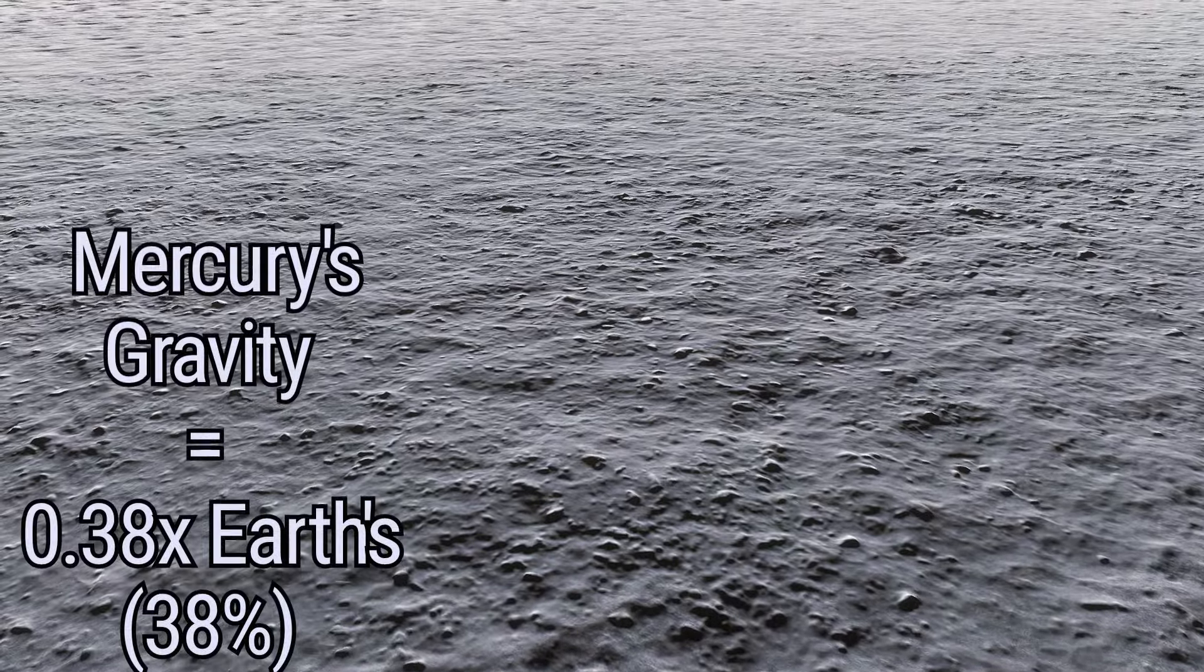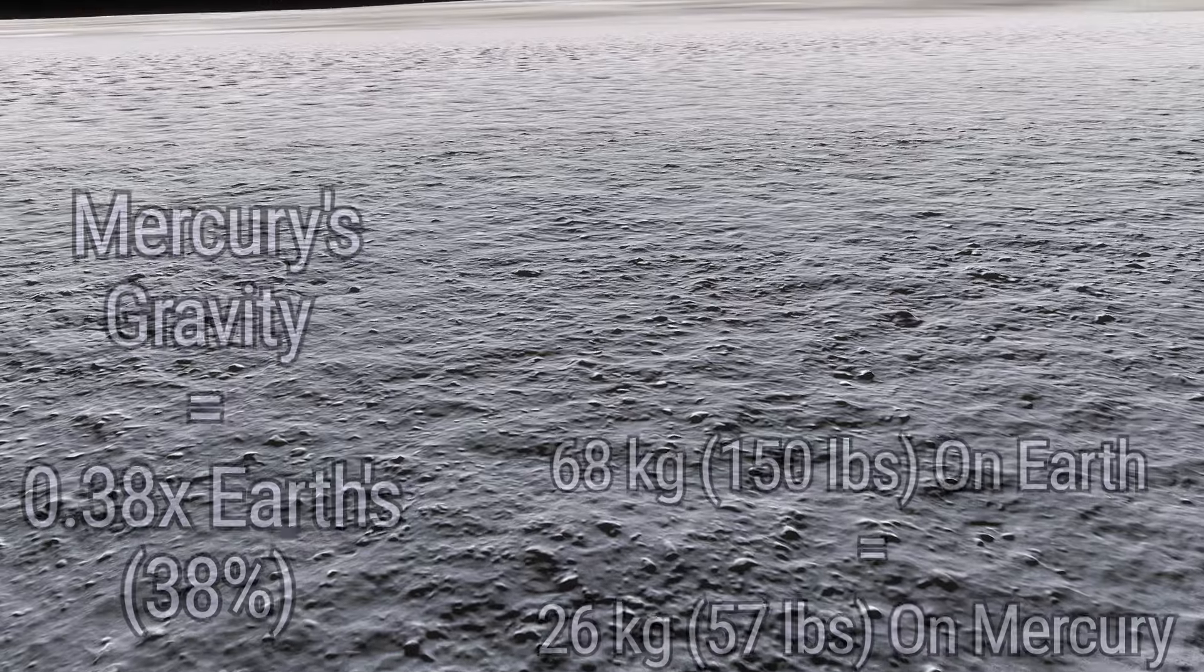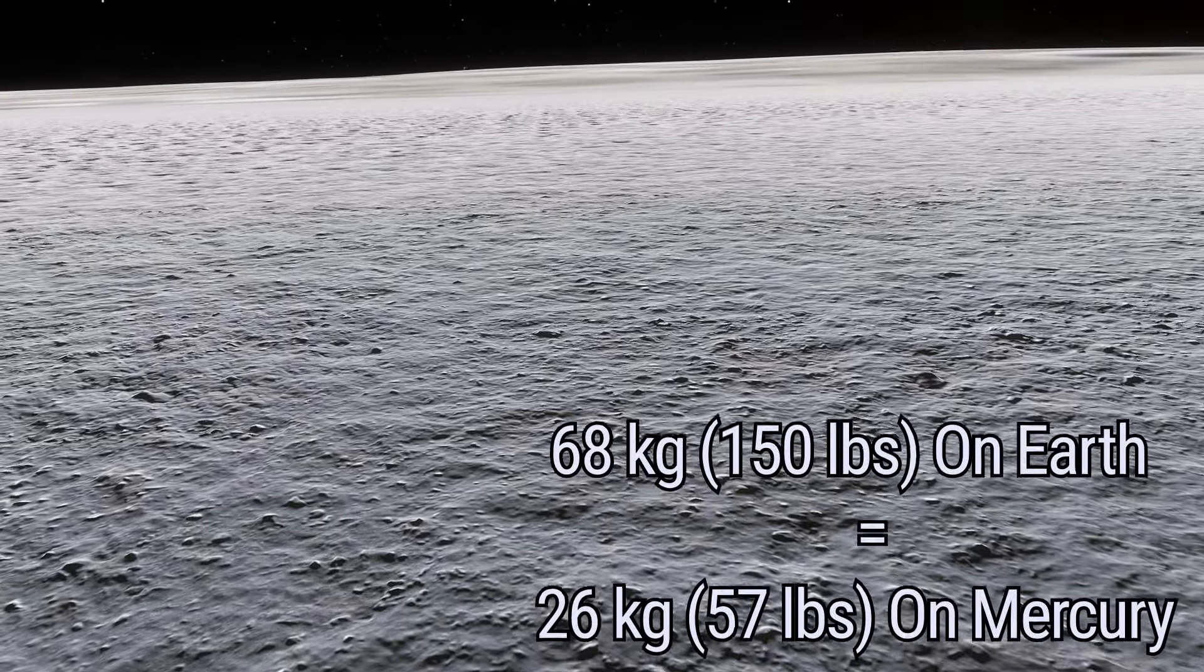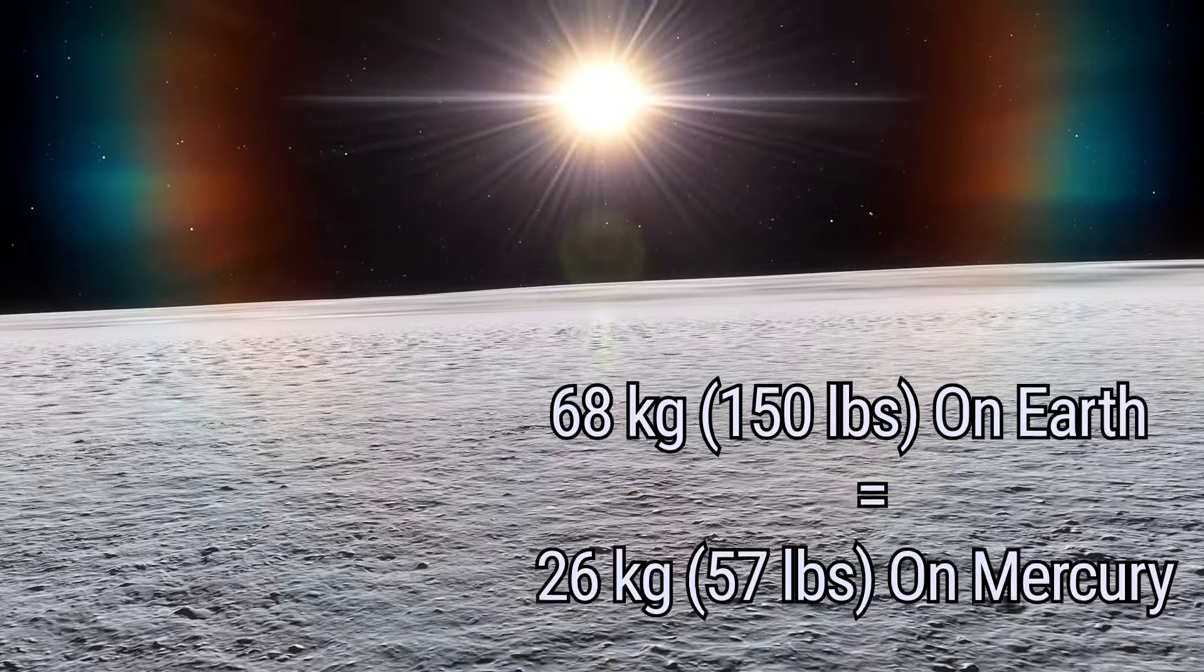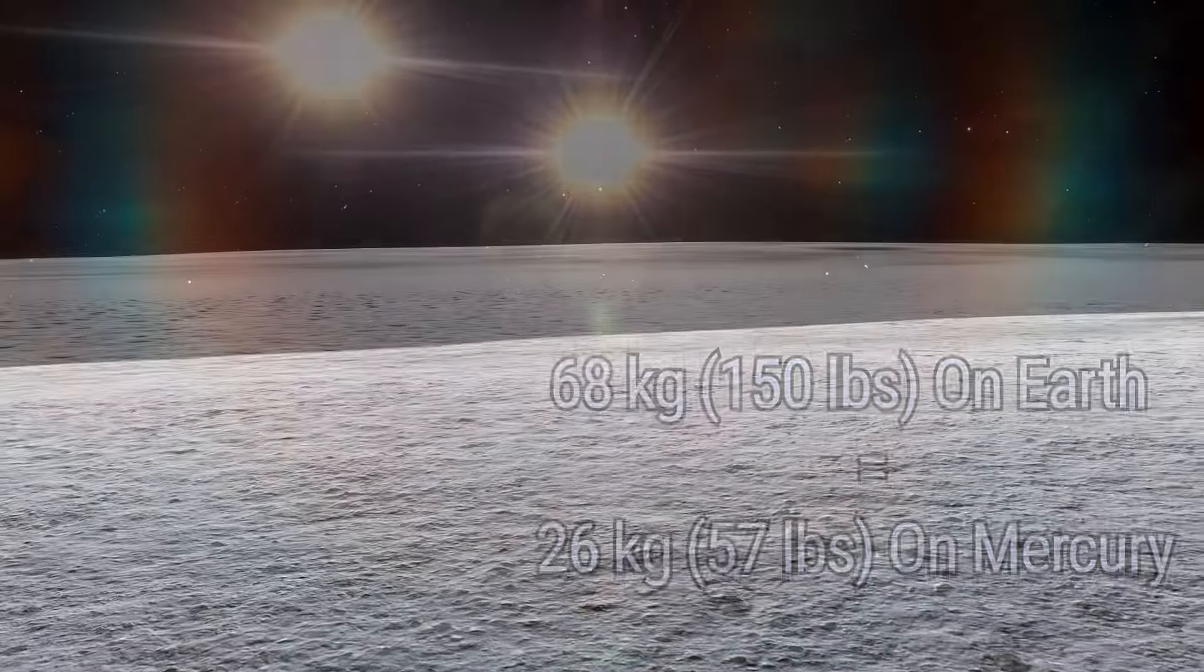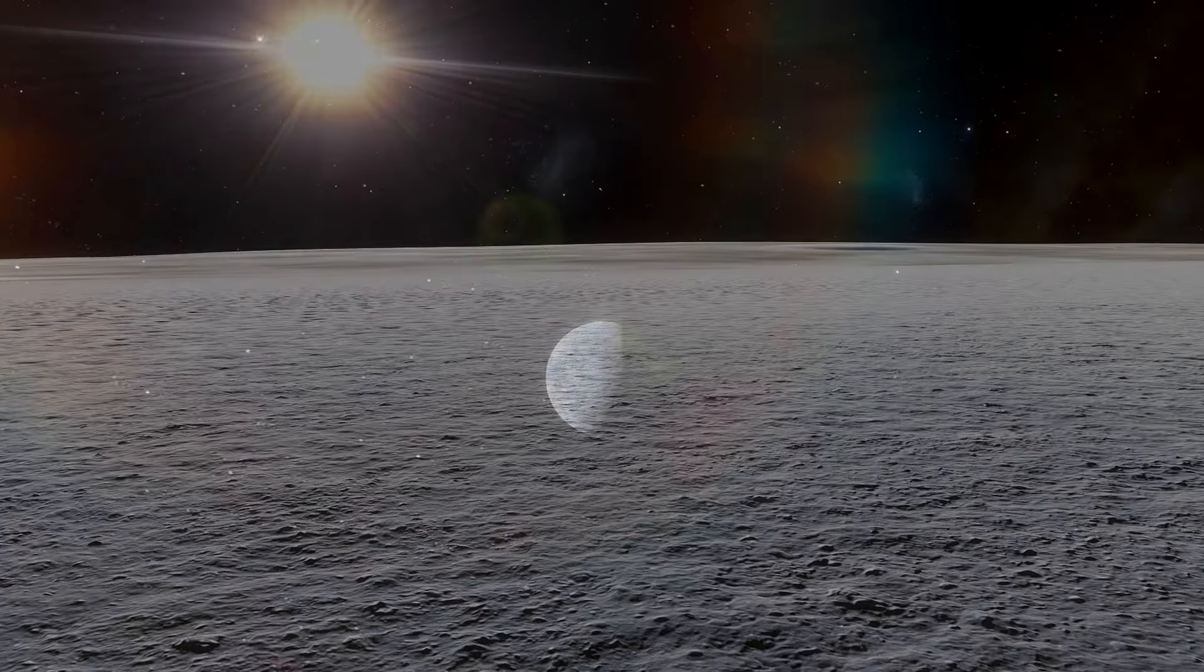With gravity just 0.38 times, or 38 percent, of Earth's, a person who weighs 68 kilograms, or 150 pounds, on Earth would weigh approximately 26 kilograms, or 57 pounds, on Mercury's surface. Imagine feeling just 38 percent of your weight.